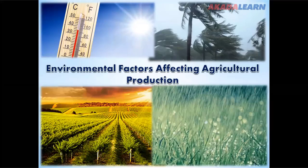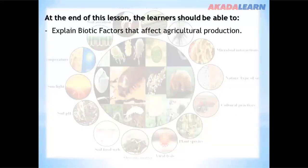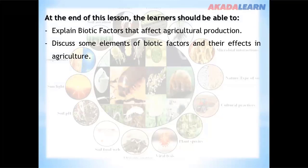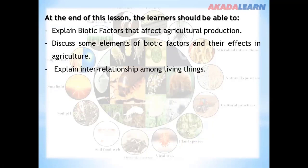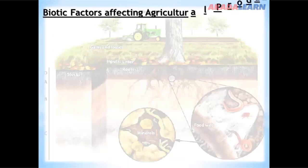On this topic, the learner should be able to explain biotic factors that affect agricultural production, discuss some elements of biotic factors and their effect on agriculture, and explain the interrelationship among living things.